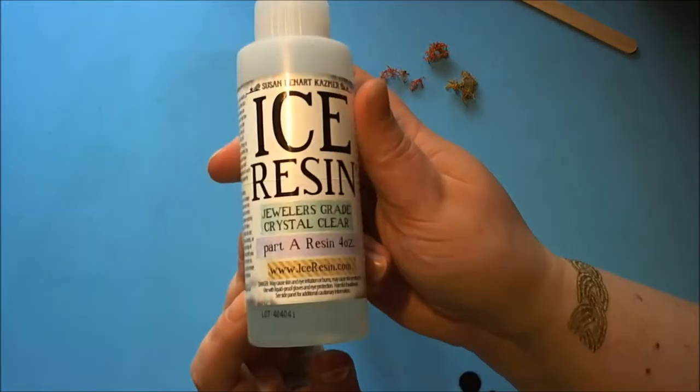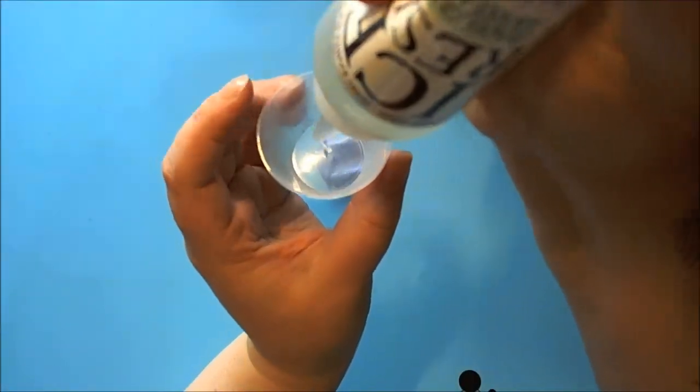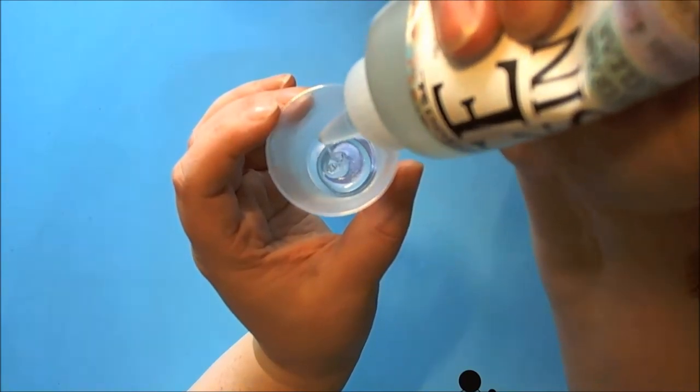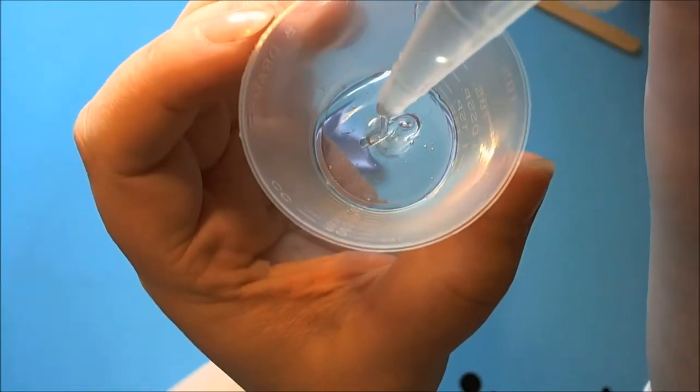Taking a mixing cup and part A of the ice resin I'm going to squeeze a small amount into the bottom of the mixing cup. You do have to squeeze quite hard with part A, it's very gloopy and very thick and it is supposed to be that way.